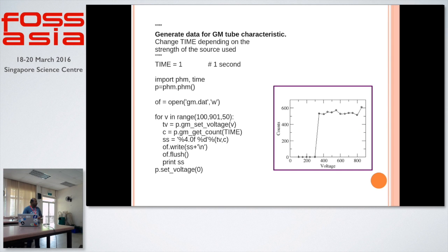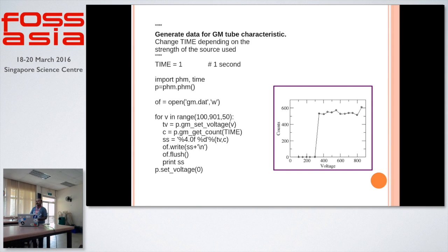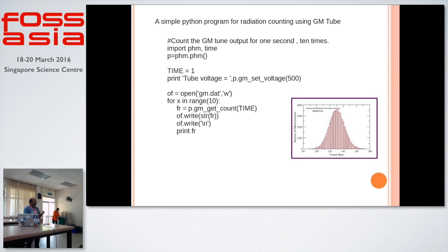This is the typical program that has been written in Python. Python is considered to be very simple programming and scientists use Python most of the time for any kind of characterization or analysis of results. This is another Python program where we can use it to find out the total amount of disintegrations coming from the material.